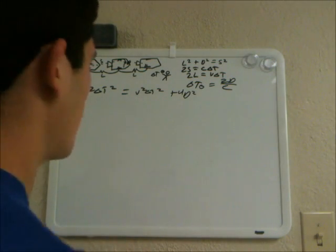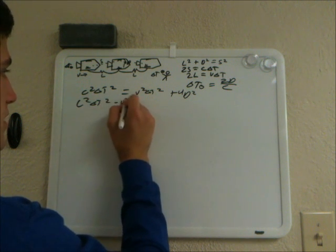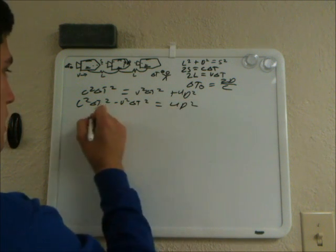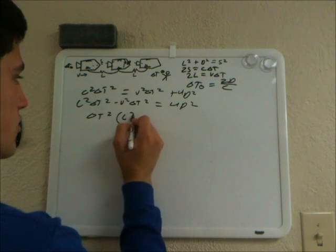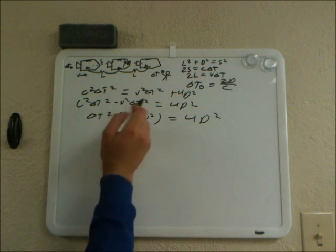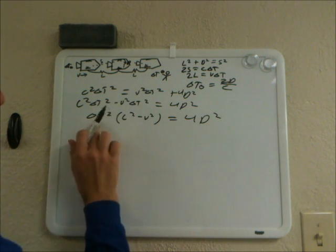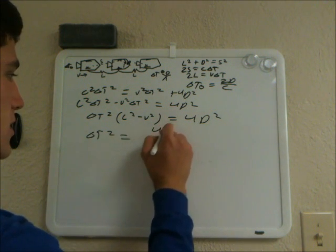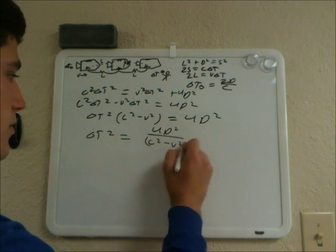Now isolating delta T squared: C squared delta T squared minus V squared delta T squared equals 4D squared. Factoring, delta T squared times (C squared minus V squared) equals 4D squared. Therefore, delta T squared equals 4D squared all over (C squared minus V squared).